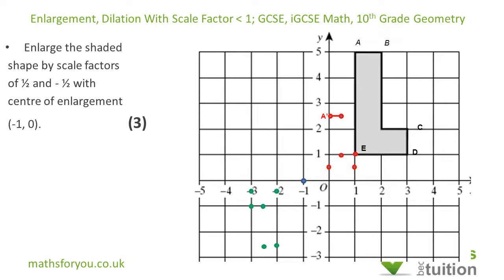Similarly for B — starting from the center of enlargement, I move 3 to the right and 5 up. Because the scale factor is one half, I move one and a half to the right and two and a half up. So B prime is there.